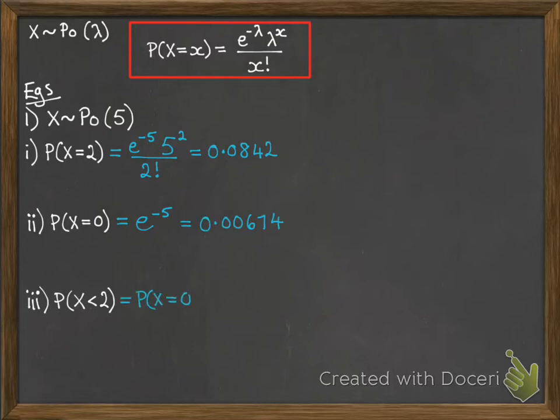In your calculator, you then get your answer. Probability to x is less than 2 is the same as the probability to x equals 0 or the x equals 1. Thinking about that flaws example, if you're looking for less than 2 flaws, you can either have 0 flaws or 1 flaw. So work out each of those and add them together.